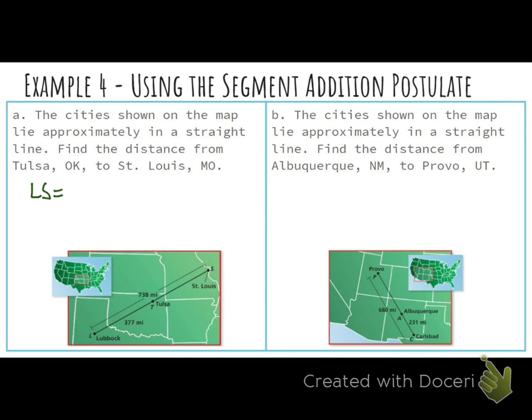Does somebody want to tell me how we could write that? I'm going to give it to Cam. Cam, you want to tell me? We can go from Lubbock to Tulsa, and then Tulsa to St. Louis. That's exactly right. So I wrote Lubbock to Tulsa, just abbreviated with the first letters. Tulsa to St. Louis, perfect.